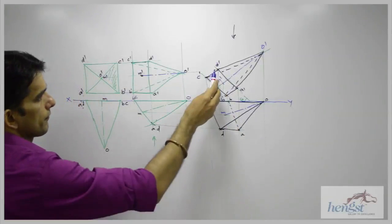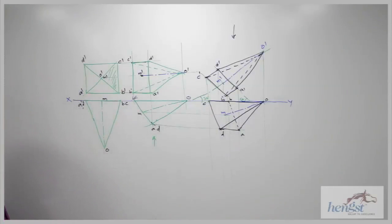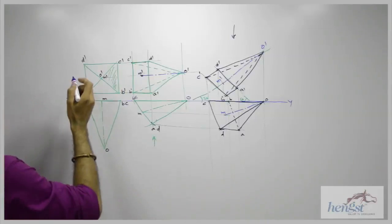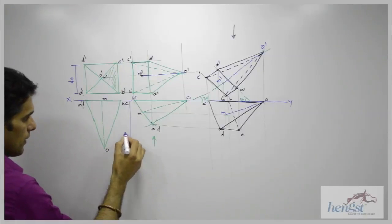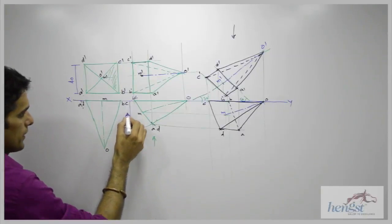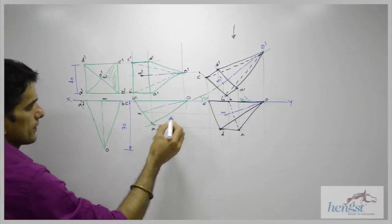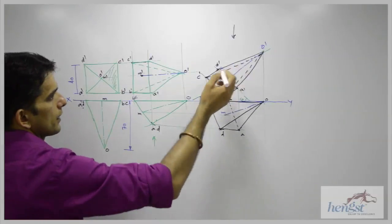So we are done with front view and top view of the given solid. We can do dimensioning as well. We have given side 40 and height 70. And this angle is important, which is 30 degree.